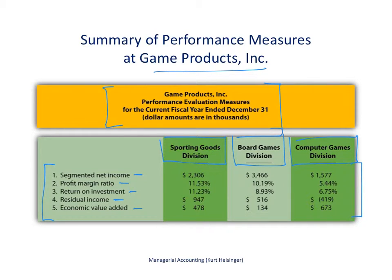The measures you see here are used to evaluate each of these divisions, and as we move down you'll see that they get a little more complicated. For the sporting goods division, segmented net income is $2,306,000 (all figures in thousands). They had a profit margin ratio of 11.53%, a return on investment of 11.23%, residual income of $947,000, and economic value added of $478,000. This is done for each division.